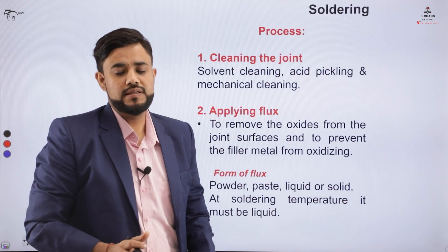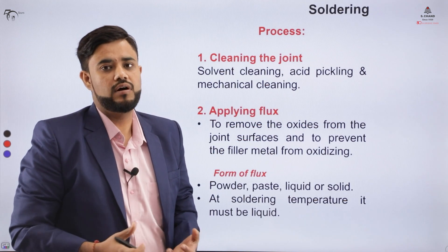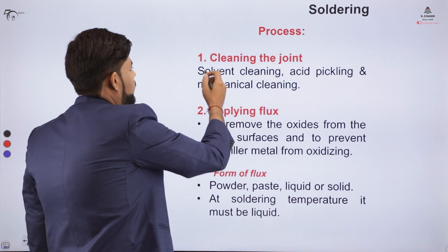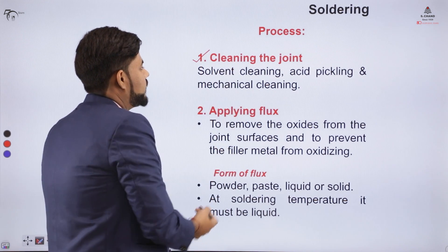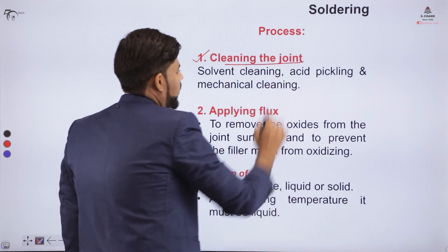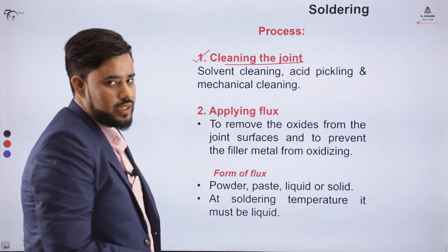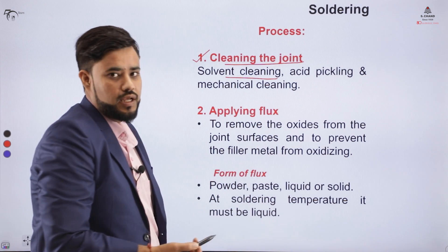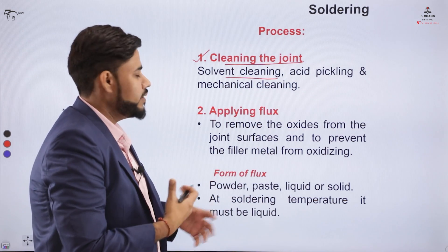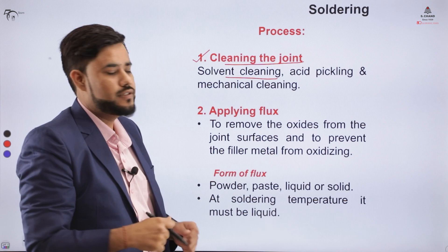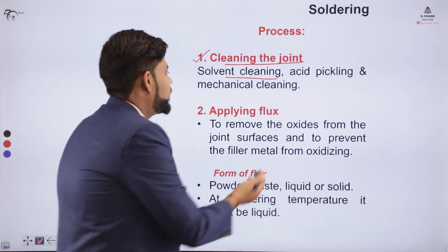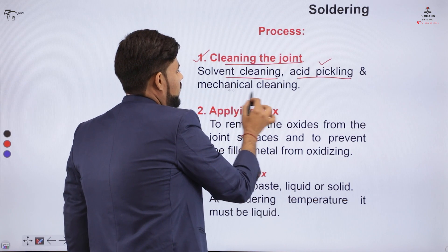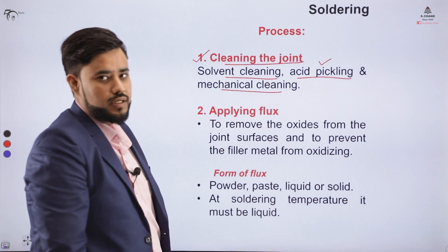Let us learn the basic procedure of the soldering process. The first step is to clean the joint. For joint cleaning, we use a solvent cleaning procedure in which a solvent is used to clean the surface. We can also go for acid pickling or mechanical cleaning, where a mechanical device is used to clean the joint surface.